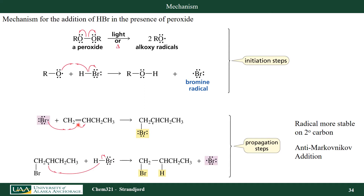That bromine radical then reacts with my alkene double bond — one of the electrons in my pi bond forms a new bond with the bromine radical, and then I form a carbon radical that goes on to react with hydrogen bromide in solution to form a new bond between the carbon and the hydrogen. I've shown the radical as a secondary radical because the secondary radical is more stable than the primary. I could have formed my radical on the terminal carbon or the internal carbon of the alkene, but the internal one is more stable.